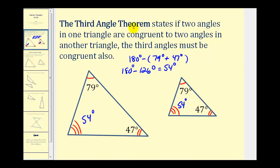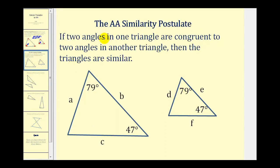This is really the basis for determining whether two triangles are similar using angle-angle. The angle-angle similarity postulate tells us that if two angles in one triangle are congruent to two angles in another triangle, then the triangles are similar. From the previous theorem, we know that the third angles would also be congruent, but this postulate saves us from having to determine the measure of that third angle.